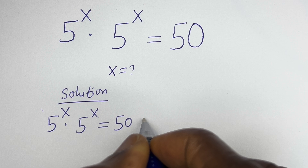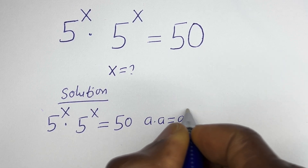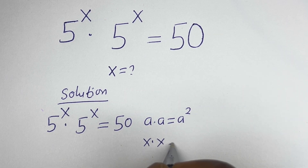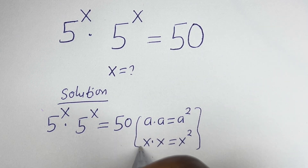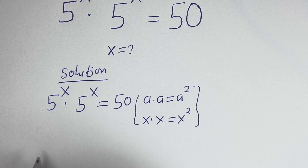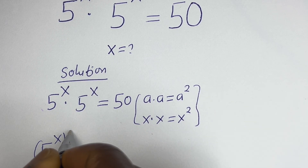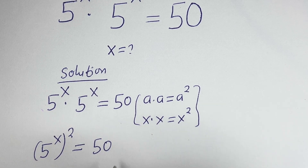Take note that if you have a multiplied by a, this is equal to a squared. And if you have s multiplied by s, this is equal to s squared. Then this can be written as 5 to the power of s squared is equal to 50.